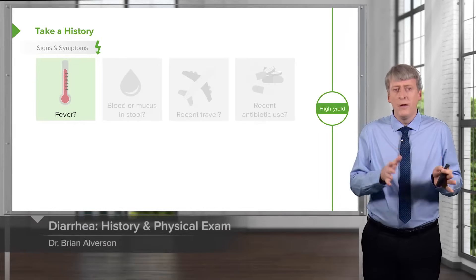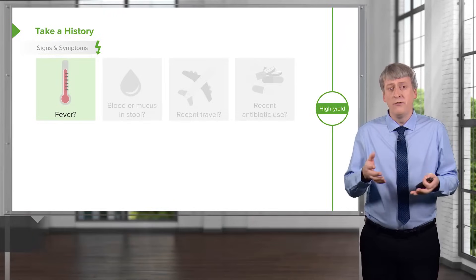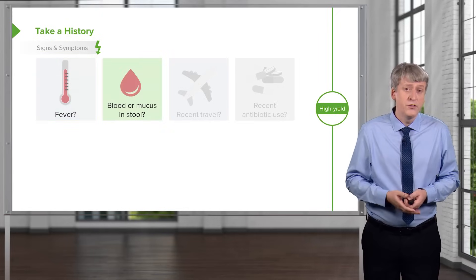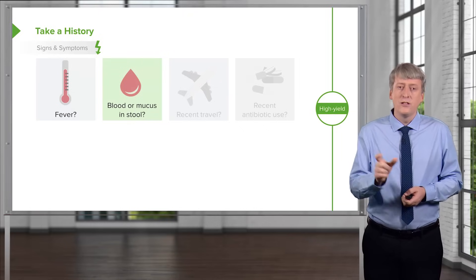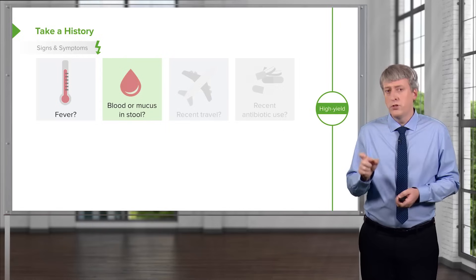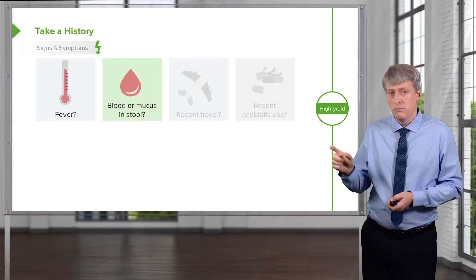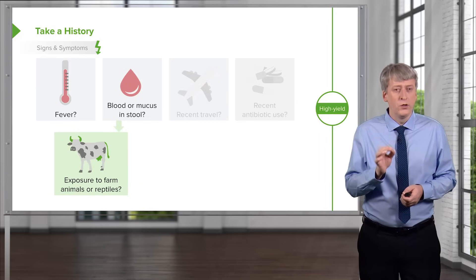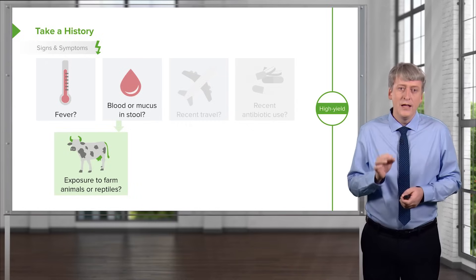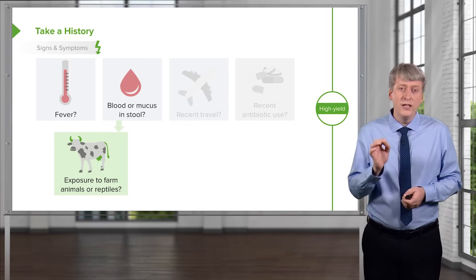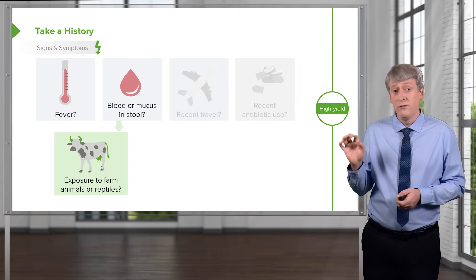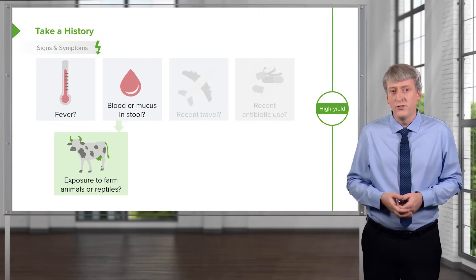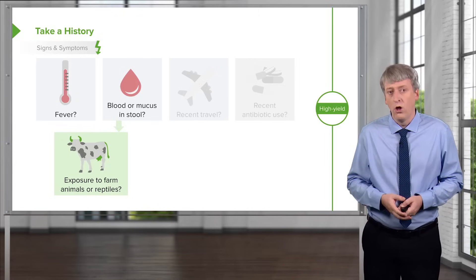If you see a child with vomiting and/or diarrhea, key things to ask include: first, fever, since children with infectious diarrhea typically may have one. Ask about blood or mucus in the stool, which may tip you off that this is a bacterial rather than viral pathogen — most bacterial gastroenteritis requiring treatment is bloody. Ask about exposure to farm animals or reptiles, as a common cause of Salmonella in children is reptile pets, and a common cause of E. coli, especially the variety that causes hemolytic uremic syndrome, is farm animal exposure.